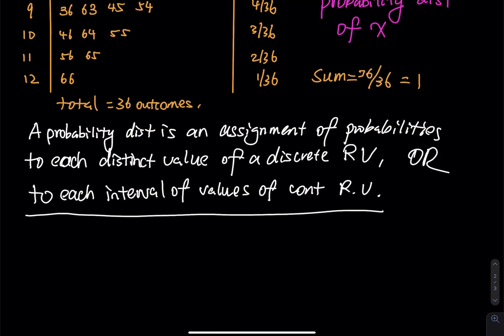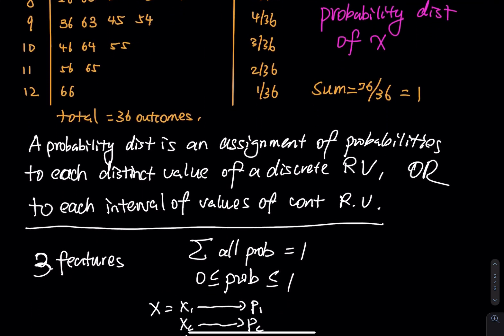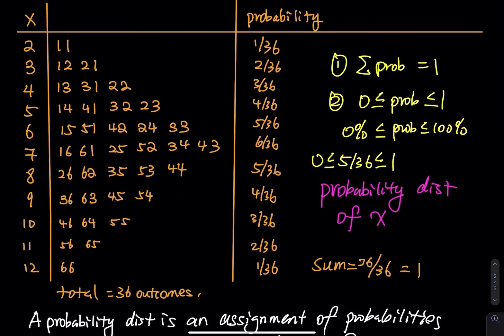There are three important features. The first is: the sum of all the probabilities is equal to 1. The second is: each probability is between 0 and 1. The third is: each probability is assigned to a distinct outcome — so X1, X2, X3 each have their own probability. Every distinct value has its own probability. So as long as all of those are mapped, that is a probability distribution, and the entire table we built represents one.